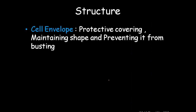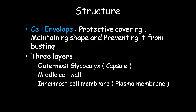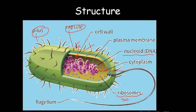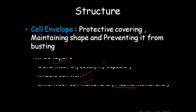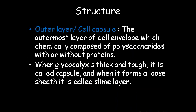The cell envelope forms a protective covering and maintains the shape, preventing the cell from osmotic bursting. It has three layers: the outermost layer is glycocalyx (the capsule), the middle layer is the cell wall, and the innermost layer is the plasma membrane. The inner is the plasma membrane, then the middle wall, and then the outer capsule.